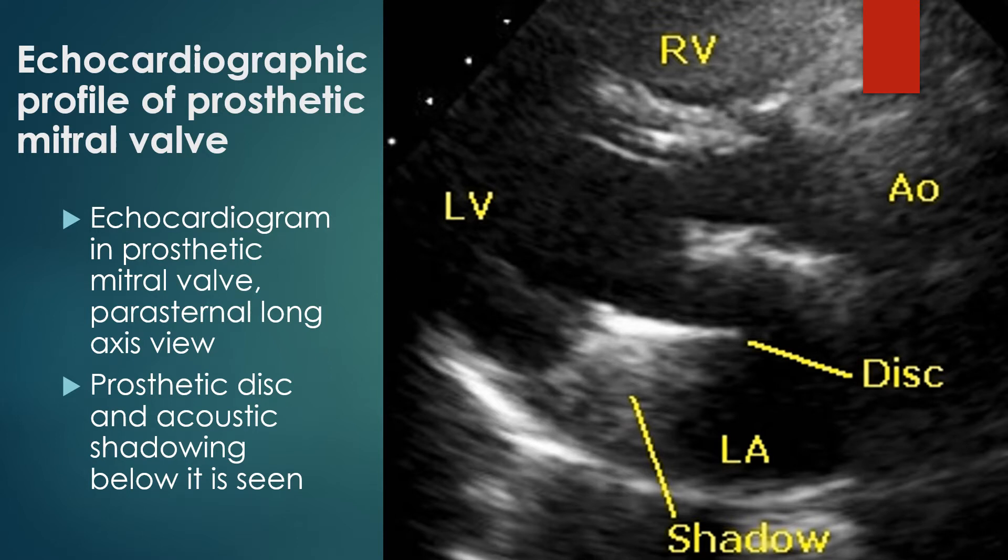The prosthetic mitral valve disc is seen in a horizontal position with significant echo density of the metallic component. Acoustic shadowing is seen posterior to the dense disc shadow, extending up to the posterior wall of the left atrium proximal to the mitral annulus. Because of this acoustic shadowing, it will be difficult to recognise any structure in that region, such as a vegetation or a thrombus.